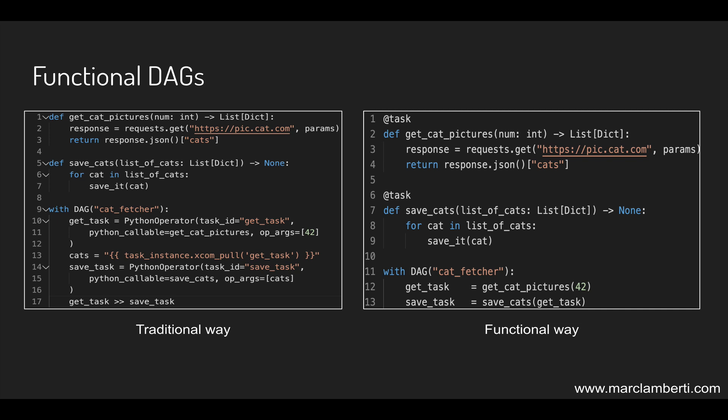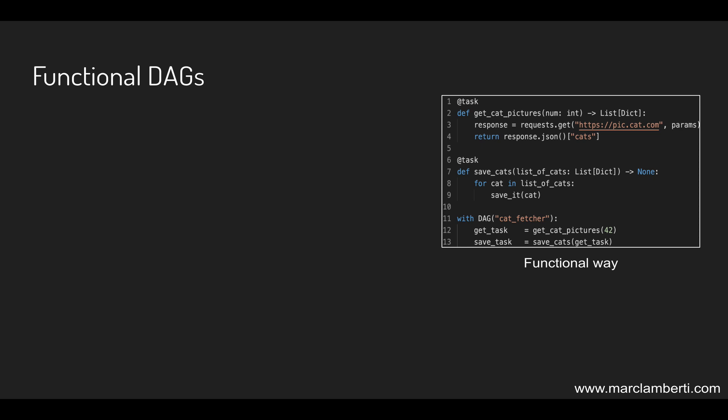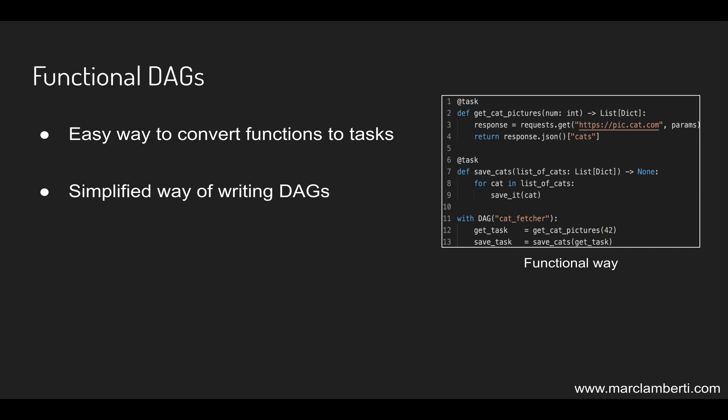The new approach is much simpler — this is the same DAG but written in a functional manner using decorators like '@task' above the functions, so no need to specify the operator anymore. The dependencies are also implicitly set by passing the result of 'get_cat_pictures' as a parameter to 'save_cats'. Not only are you defining dependencies between tasks, but you are also specifying how data should be processed between them. In functional DAGs, functions are automatically converted into Airflow tasks using decorators, making your DAG code much easier and more concise.